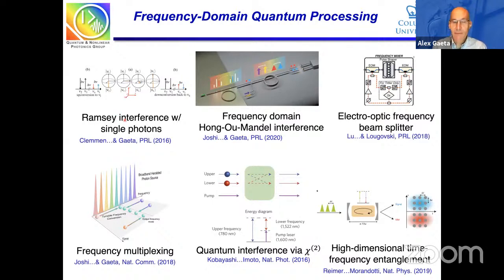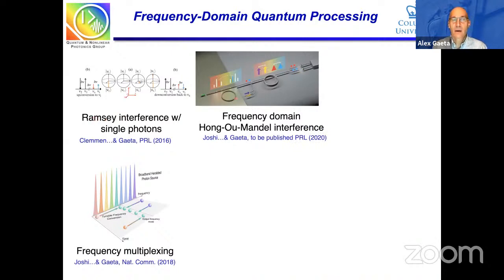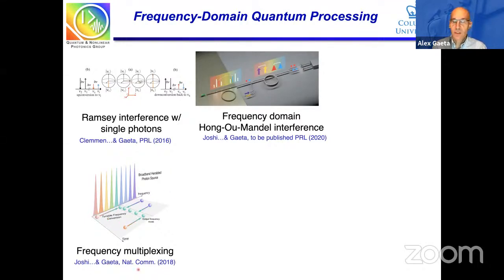There have been a number of nice demonstrations of frequency domain quantum processing in recent years. What I'll be focusing on today are our efforts on frequency domain quantum processing: Ramsey interference with single photons, frequency domain Hong-Ou-Mandel interference — a fundamental two-photon interference innate to true quantum systems — and how we exploit this to do frequency multiplexing. At the end I'll also discuss using quantum frequency conversion for different types of quantum information processing.